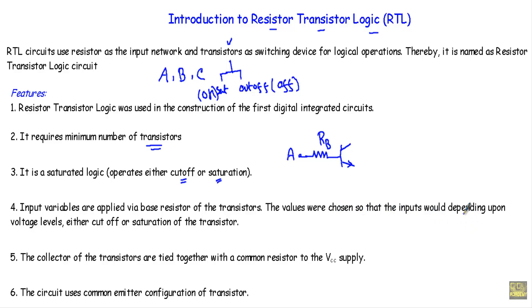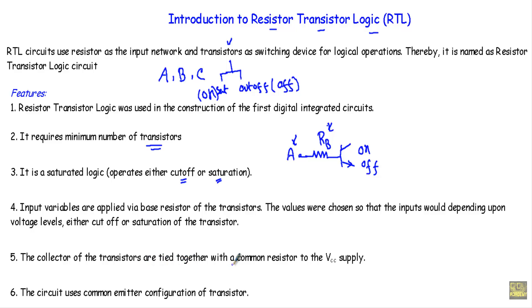We will choose the value of RB such that, depending upon the logical inputs, our transistor will be either in on state (saturation mode) or in off state. Fifth, the collectors of the transistors are tied together with a common resistor to the VCC supply.